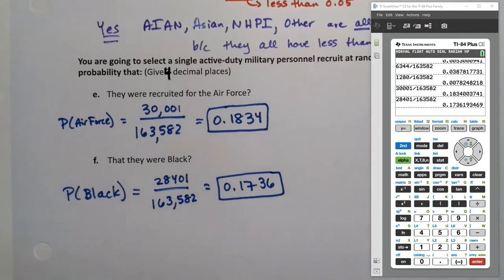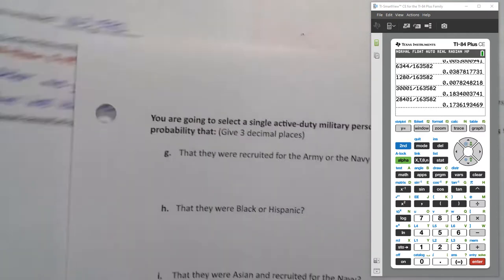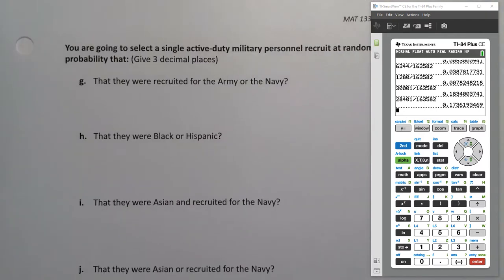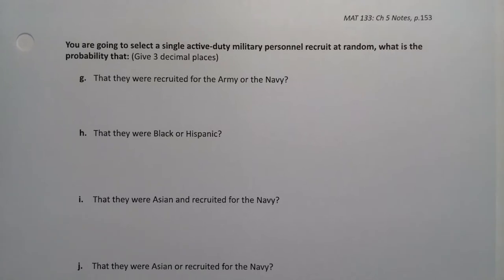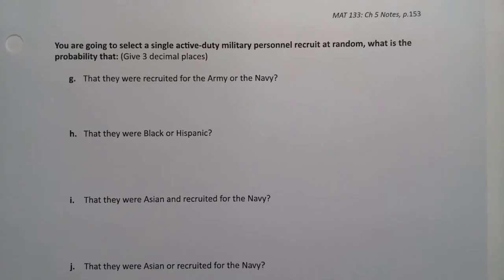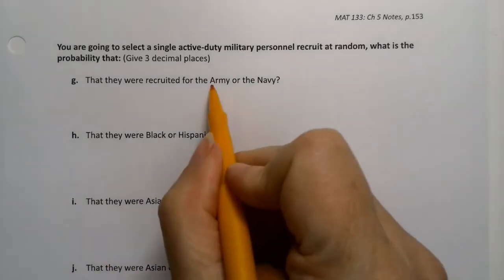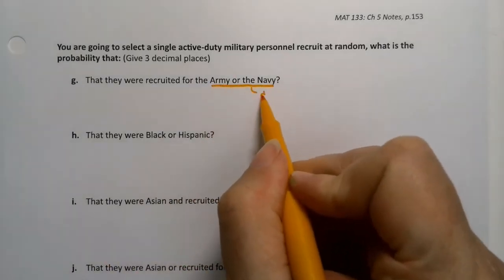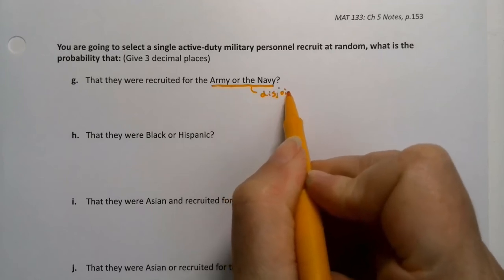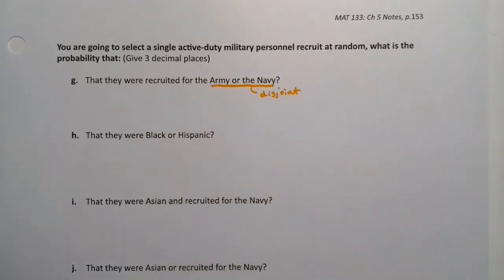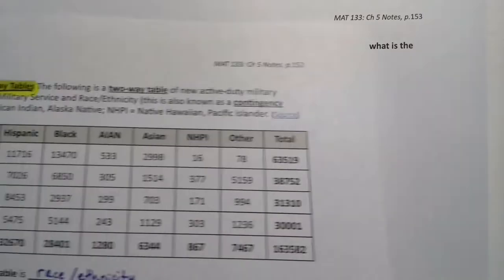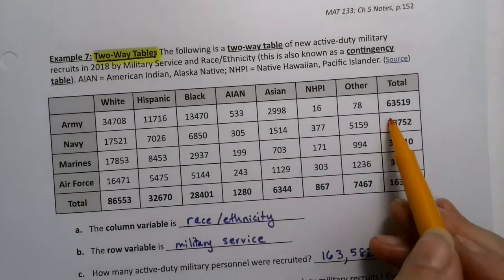All right. Now we're going to keep using this table, but to answer more questions. We have so many questions to answer that we have to split it amongst two pages. All right. You're going to select a single active duty military personnel recruit at random. So still one person you're going to draw. What is the probability that it recruited for the army or the navy? Ah, okay. Well, notice army and navy are disjoint. You can't be recruited for both, right? You can like both of them, but you can't be recruited for both of them.